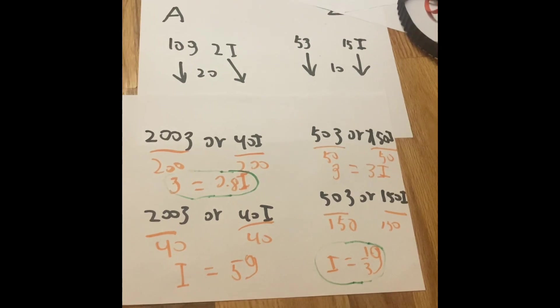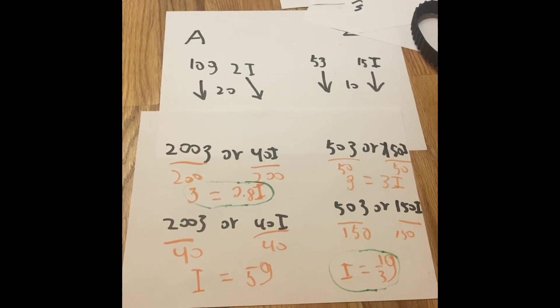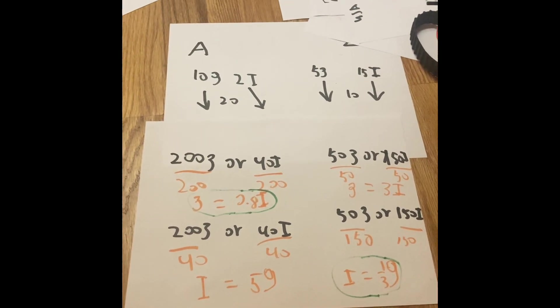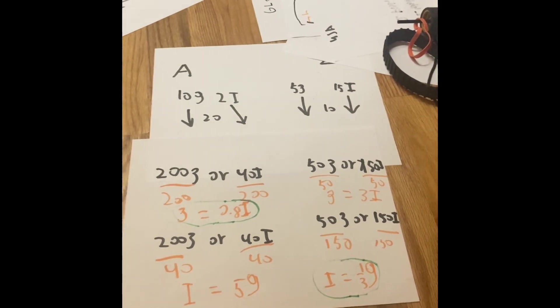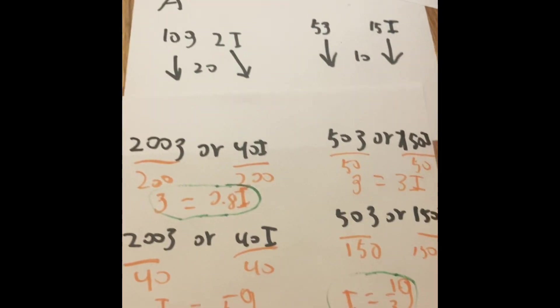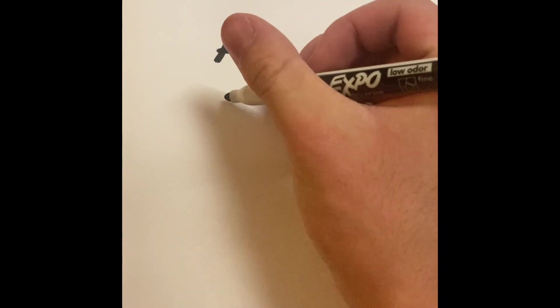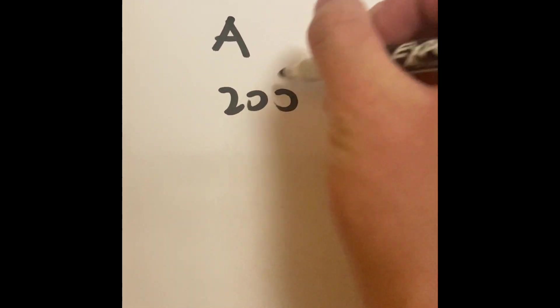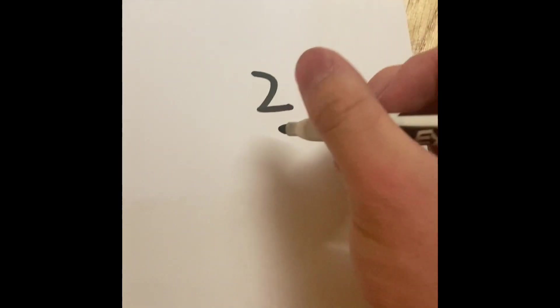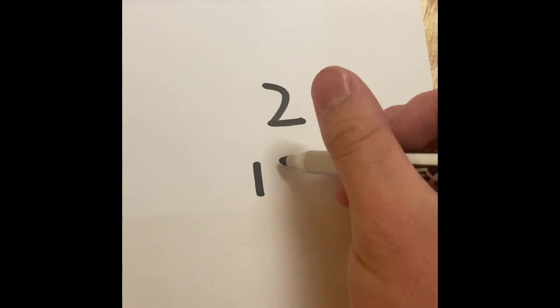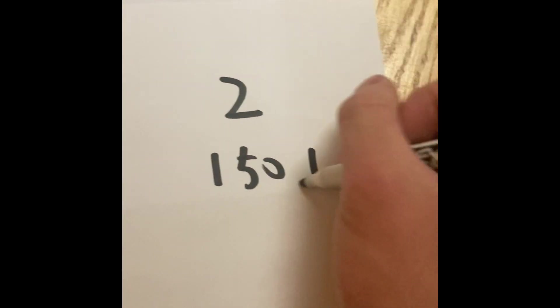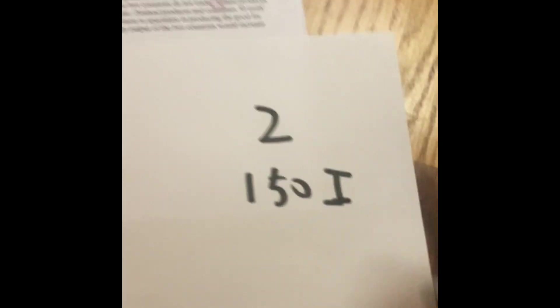So if both countries are specializing in what they like to do, and what they're really good at, at the comparative advantage, what they're saying is that Agland is going to produce 200 grains, and Zenland is going to produce 150 incense. Now we get to part 2 into the consuming part.